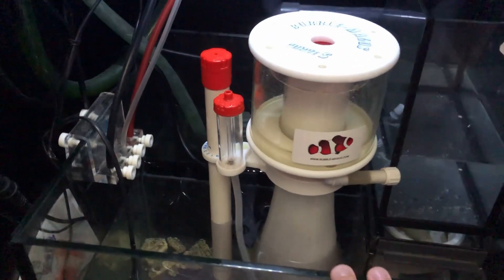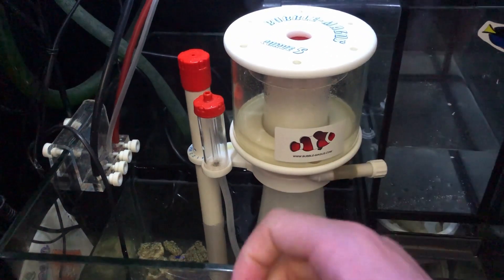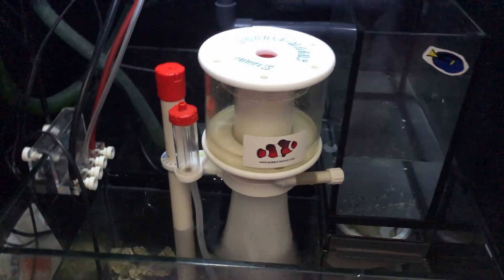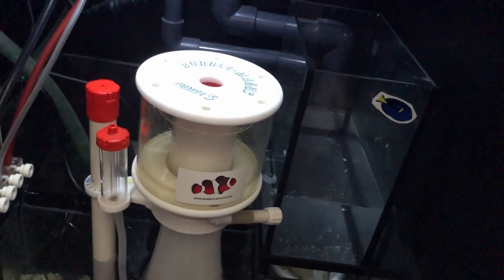The cup collects all the waste, which then you take off and clean it out. That's basically what a protein skimmer is.